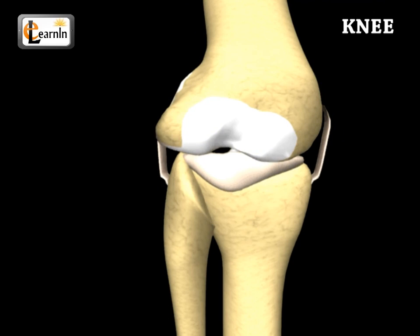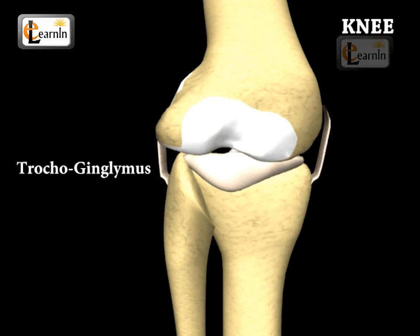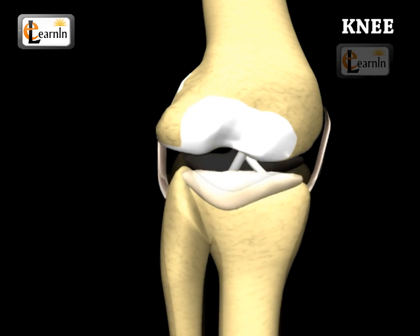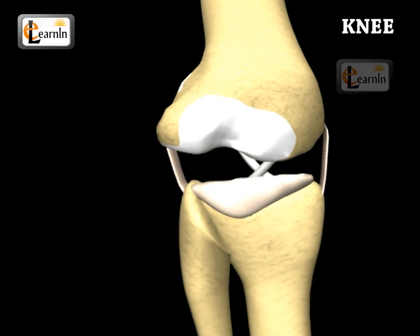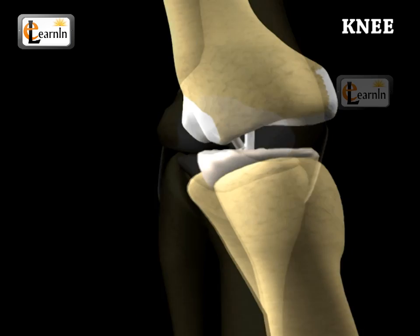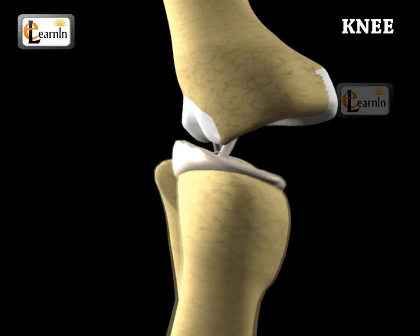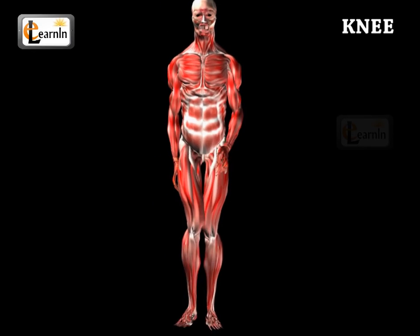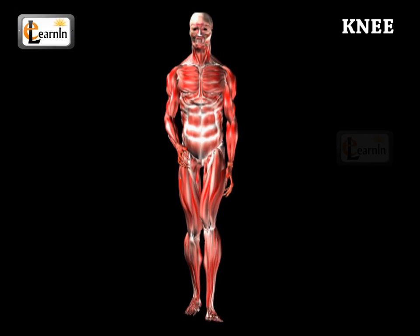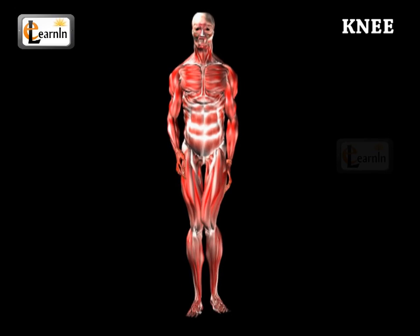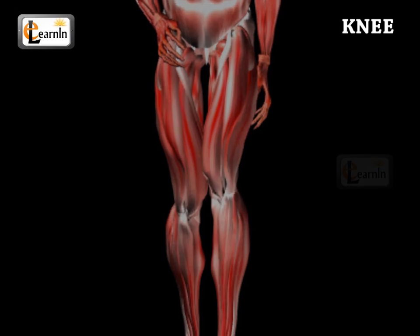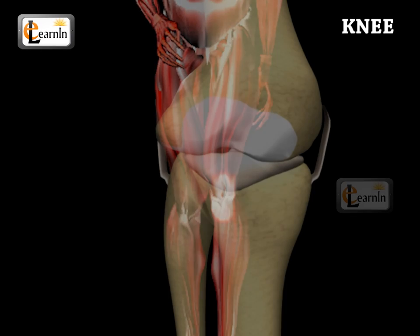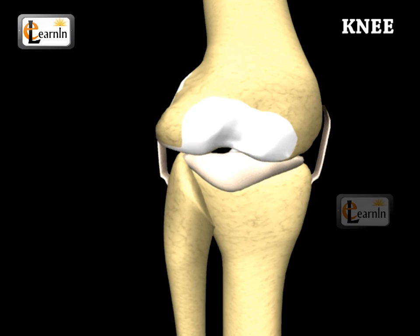The knee is a mobile trochoginglymus, which is a pivotal hinge joint. The trochoginglymus permits flexion and extension, as well as a slight medial and lateral rotation. In humans, the knee supports nearly the whole weight of the human body, so the joint is vulnerable to both acute injury and the development of osteoarthritis.